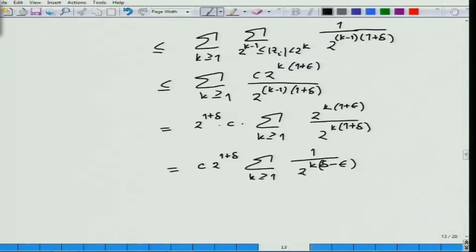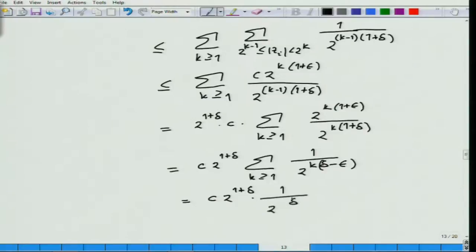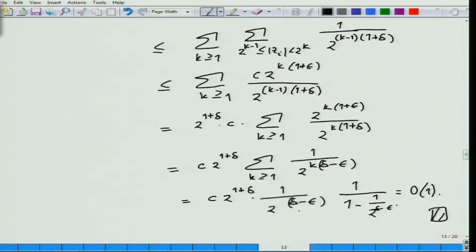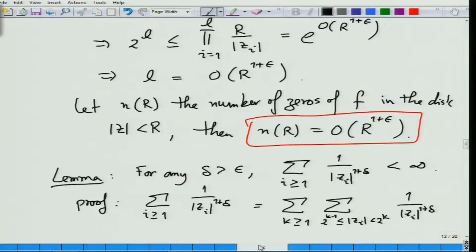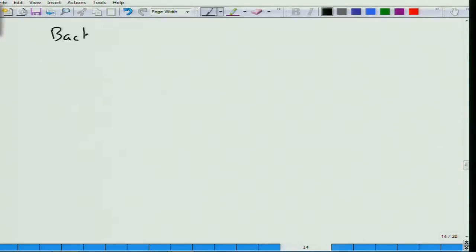This of course converges — it is a geometric series converging to some finite quantity. That is a very useful property, and this is what we are going to use to prove the convergence of the product. Back to the proof of the theorem.